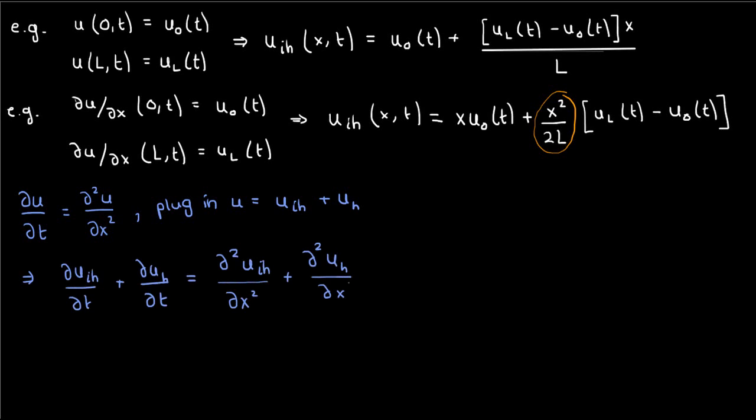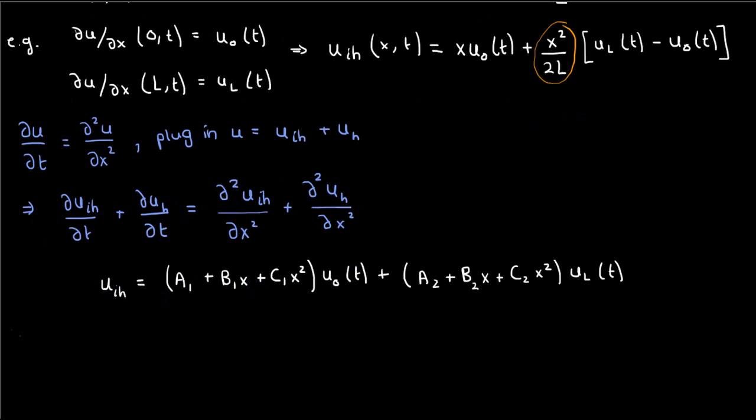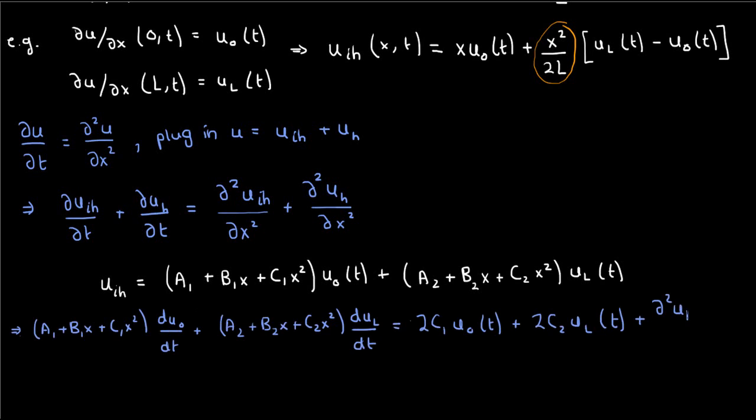Given the general form for uiH we used earlier, we can find its derivatives in both position and time, and plug those into this split up PDE. The first derivative of uiH in time is pretty easy, just differentiate the u0 and ul terms, since those are the only time-dependent ones. The second derivative of uiH in x is also easy, just differentiate the terms in x.